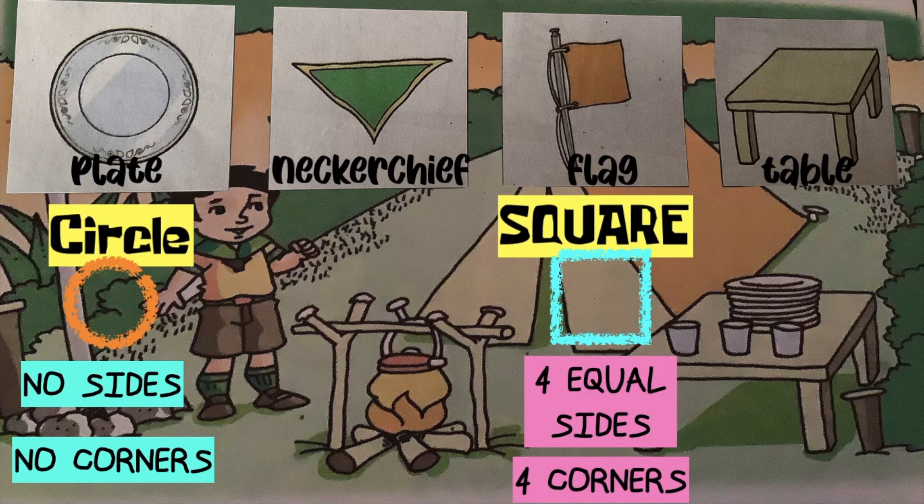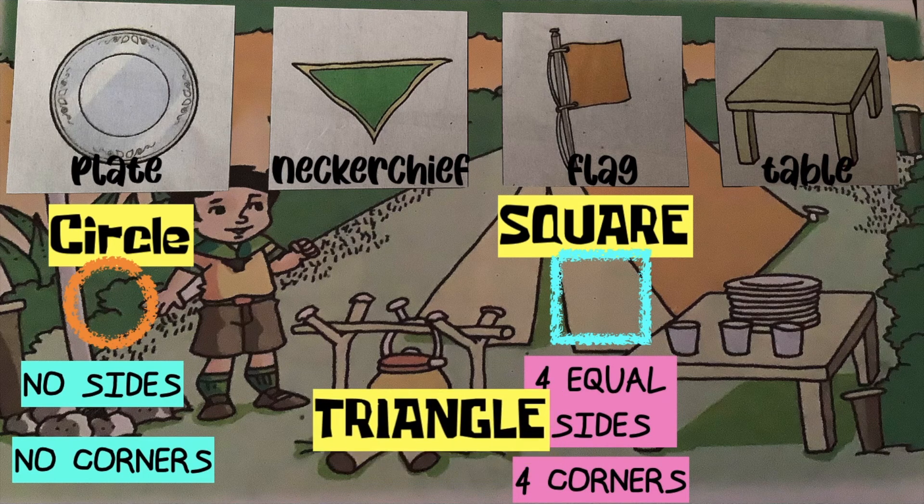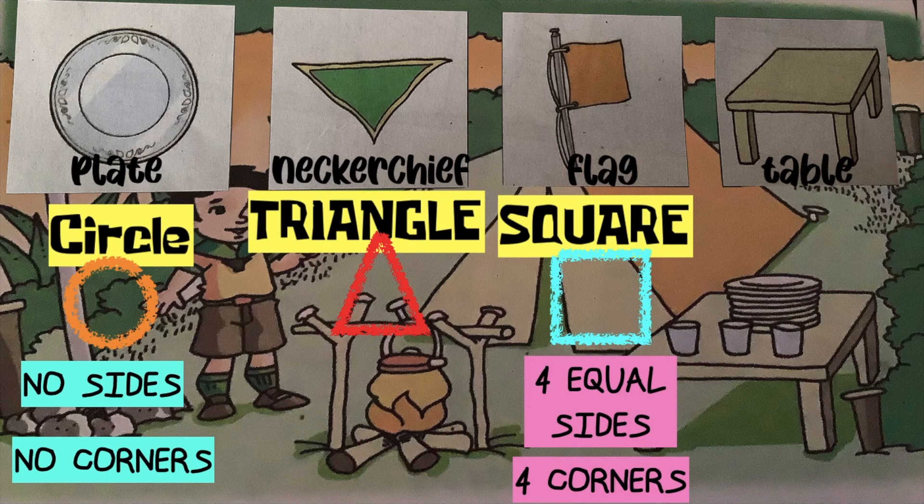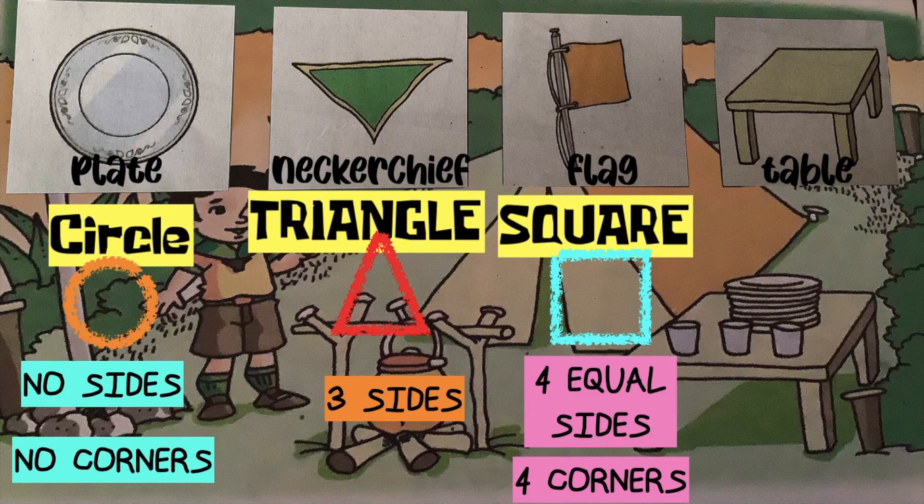Which of the objects drawn is a triangle? Good job! It is neckerchief. How many sides does a triangle have? Fantastic! It has three sides. How many corners does it have? Very good children! It has three corners.